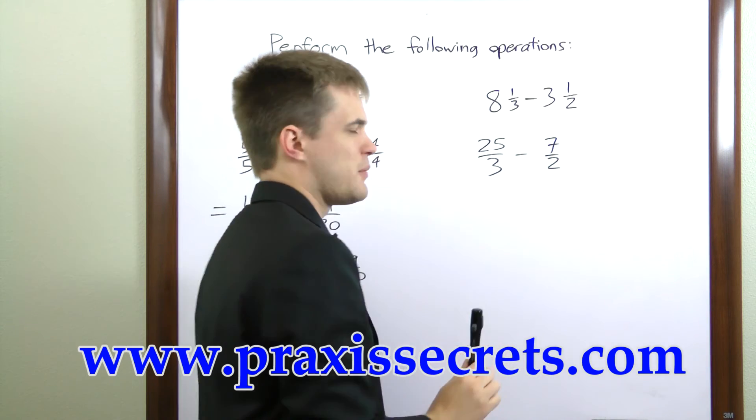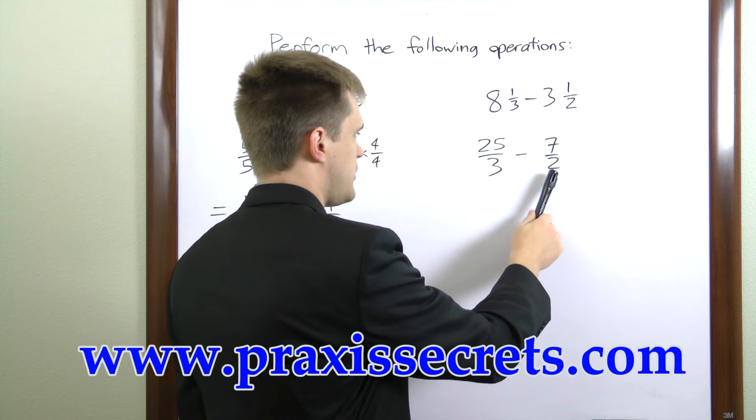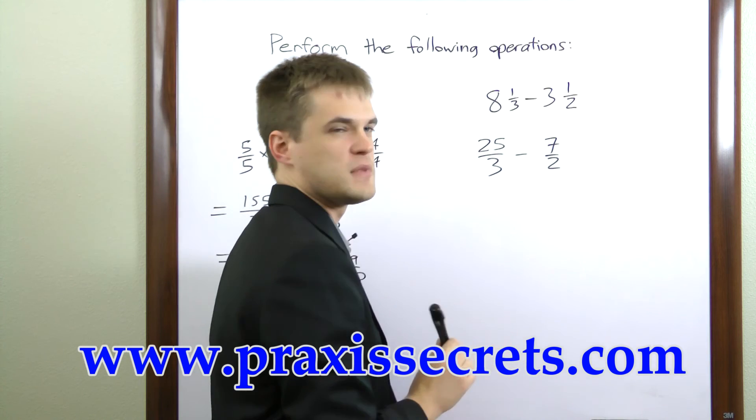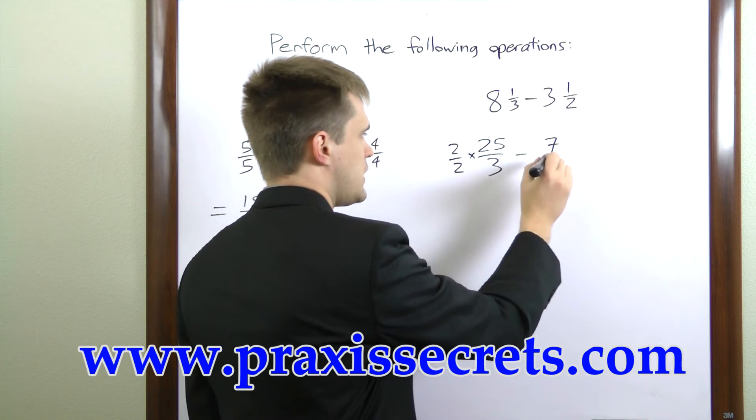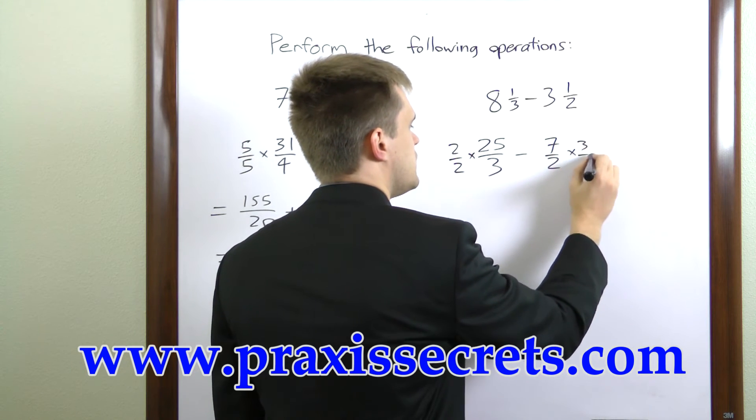Again we have to create a common denominator. The least common multiple between 2 and 3 is 6 so we'll multiply the first term by 2 over 2 and the second term by 3 over 3.